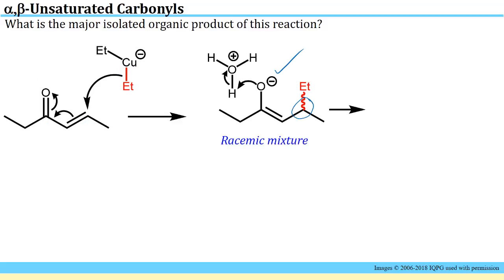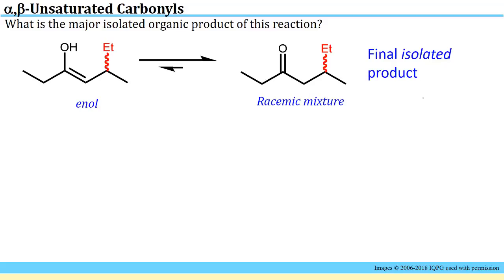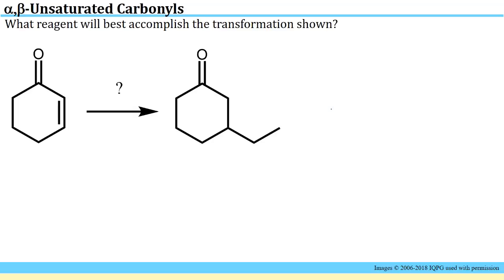Since we've generated a chiral center, we'd have a racemic mixture of the two potential isomers. In the second step with aqueous acid, we would protonate the oxygen. This intermediate has both an alcohol and an alkene on the same carbon — an enol — and once you make an enol like that, it will tautomerize. So the actual isolated product is the keto form, meaning our final isolated product will be a racemic mixture of the corresponding ketone.